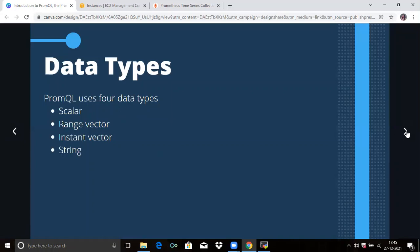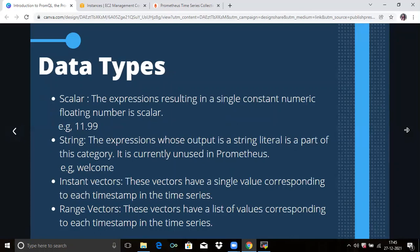Firstly, what is scalar? Scalar: the expression resulting in a single constant numeric floating number is scalar. They are just simple floating numeric values that do not have any labels. For example, 11.99, that means it's just a simple number.